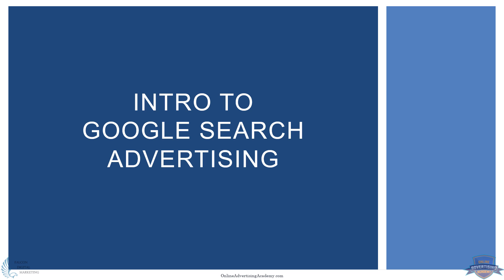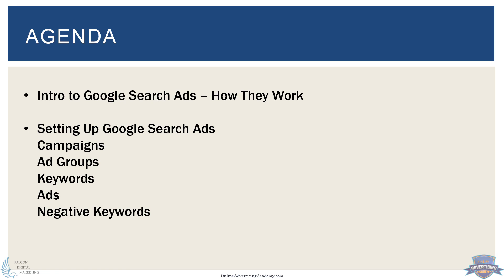In this training we'll go through a quick intro to Google search advertising so you learn how the platform works and how ads are set up. We'll cover how Google search ads work and then get into setting up Google search ads inside the actual platform from an advertiser's point of view — setting up campaigns, ad groups, keywords, ads, and negative keywords. These are all elements of your Google search campaign that you set up inside the dashboard.